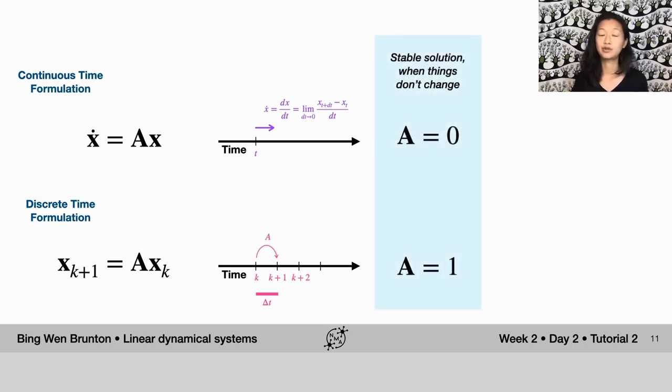Now, the simplest thing to interpret when you're looking at these formulations is by looking at the stable solution, when things don't change. In the continuous time formulation, things don't change when x dot equals 0, and that only happens when A equals 0.